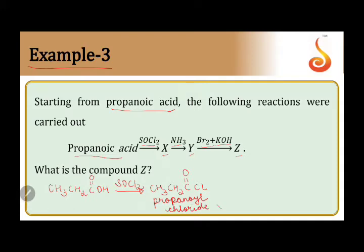This is compound X. On reaction with ammonia, the Cl is replaced by NH2, with HCl as the byproduct. In the previous step, the byproducts were SO2 and HCl.